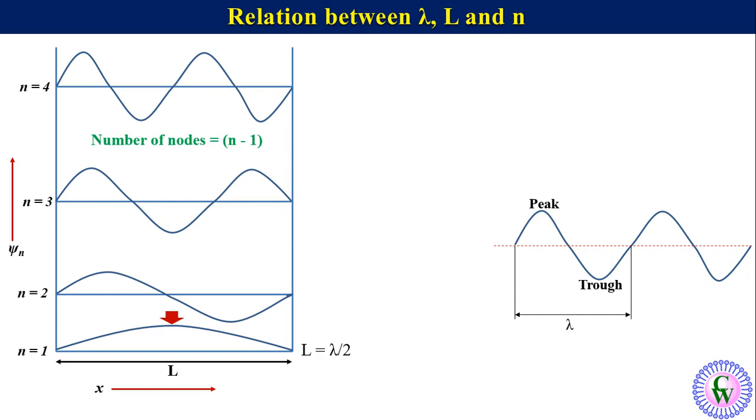For n equals 2, there is one peak and one trough, so L equals lambda. For n equals 3, there are two peaks and one trough, so L equals 3 lambda over 2.